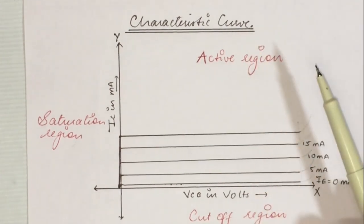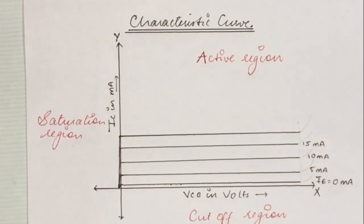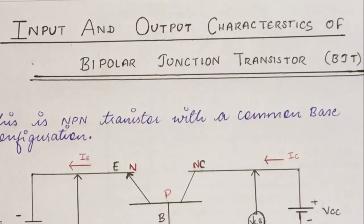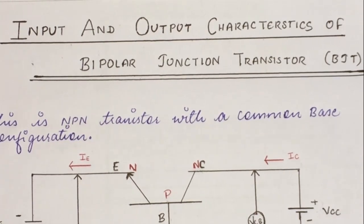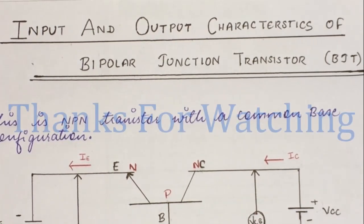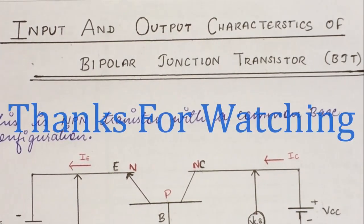This output characteristic curve gives us information about output current with respect to output voltage for different values of input current. In this video we have discussed the input and output characteristics of bipolar junction transistor. I hope this video was helpful. Please like this video, subscribe to this channel, and thanks for watching.